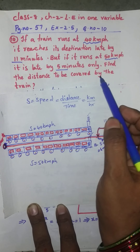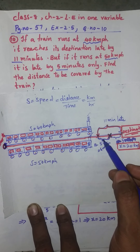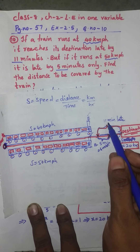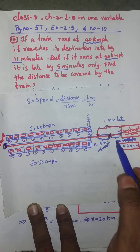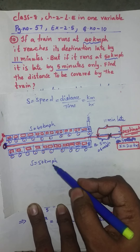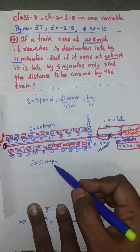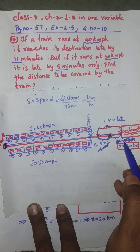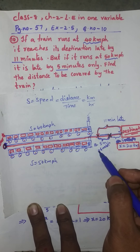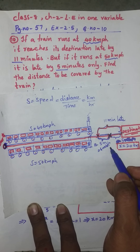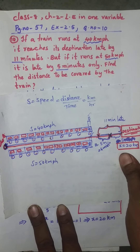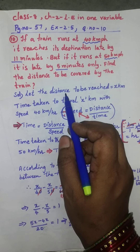We need to find the distance to be covered by the train. At 40 km/h it is 11 minutes late, and at 50 km/h it is 5 minutes late. If we subtract both times: 11 minus 5 equals 6 minutes. We are going to use this 6-minute difference to solve the problem.